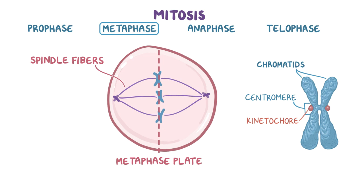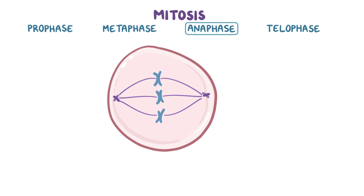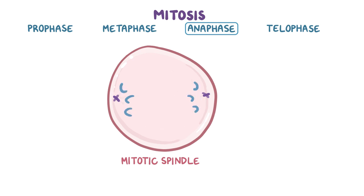Spindle fibers consist of microtubules that originate from the centrioles and polymerize in the direction of the kinetochores. During anaphase, the centrosomes start pulling on the spindle fibers to pull the sister chromatids apart, forming the mitotic spindle. It looks like a fishing line being cast out to its target, and then the line gets reeled in, pulling the kinetochore and its attached sister chromatid away from its partner chromosome.